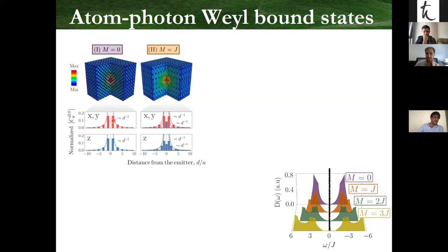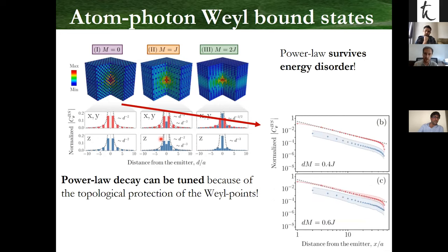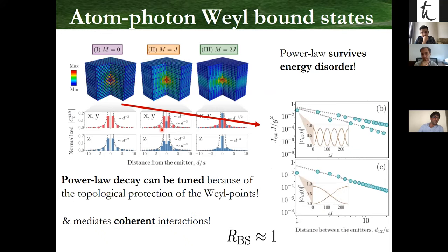If you move the parameter m, you can change the shape of the bound state. Remarkably, you can get different values of the power-law exponent in different directions by tuning m, because unlike the Dirac case you really change the band structure around the Weyl points. Thanks to the topological protection of the Weyl points, the power-law decay can be tuned to a certain extent without opening the band gap and therefore without having exponential localization. The overlap with the bound state is independent of system size and you get very robust coherent oscillations — it is a true qubit-photon bound state in this situation.